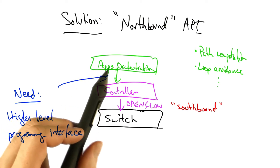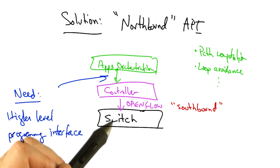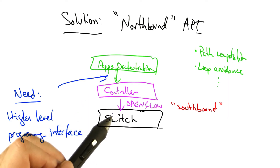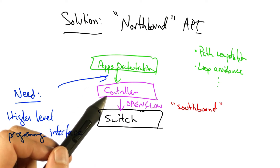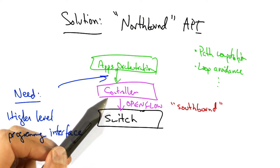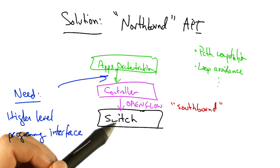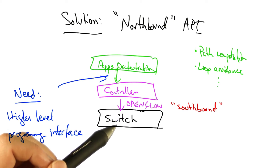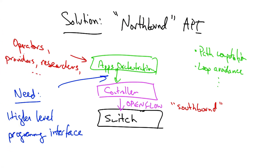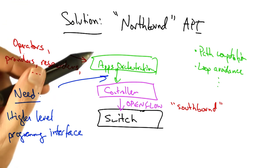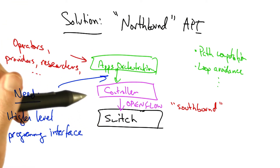The application isn't writing low-level OpenFlow rules, but rather expressing what it wants to happen in terms of higher-level behaviors, without regard to whether rules are being installed in a consistent and correct fashion. Various people may write these applications, including network operators, service providers, researchers, and anyone who wants to develop capabilities on top of OpenFlow.